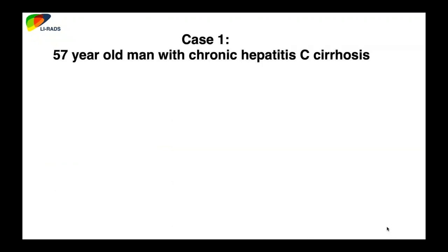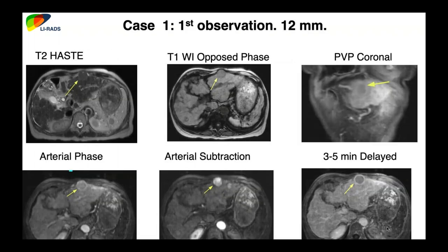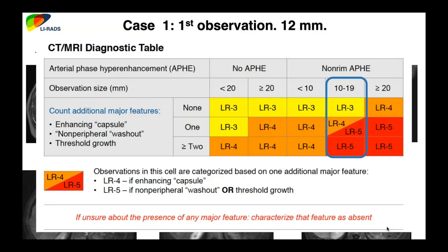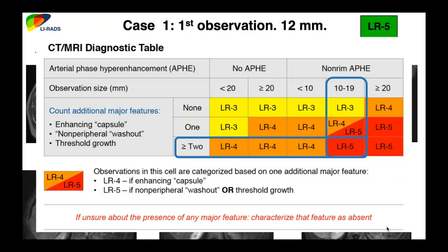Let's get into cases — approximately 16 cases. Our first case is a 57-year-old man with chronic hepatitis C cirrhosis. There is a 12-millimeter observation in the left lobe, barely visible on T2-weighted images. The arterial phase and subtraction imaging show arterial enhancement. On portal venous coronal and 3-to-5 minute delayed images, there is definite washout and a capsule. With arterial enhancement, enhancing capsule, and washout, this is LIRADS 5.